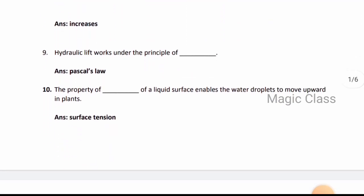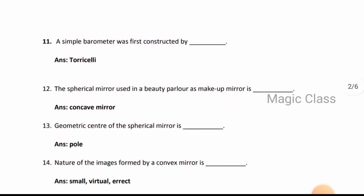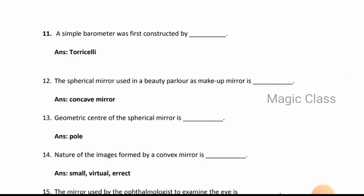Question 11: A simple barometer was first constructed by Torricelli. Question 12: The spherical mirror used in beauty parlor as makeup mirror is concave mirror. Question 13: Geometric center of the spherical mirror is called pole.